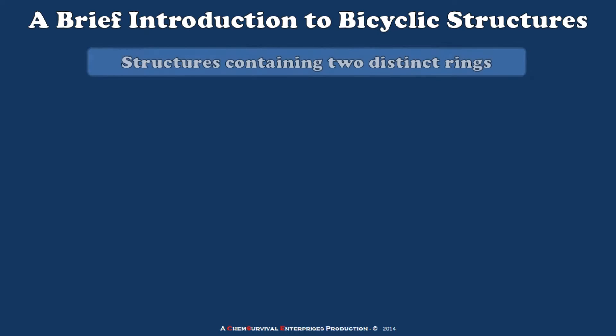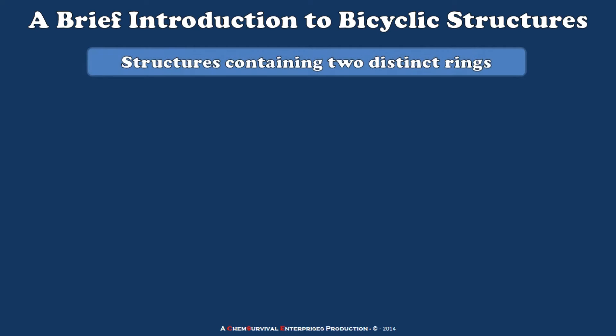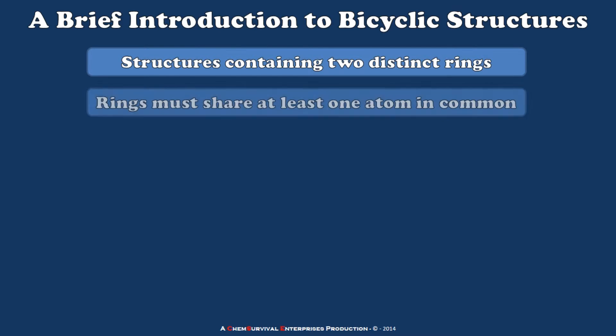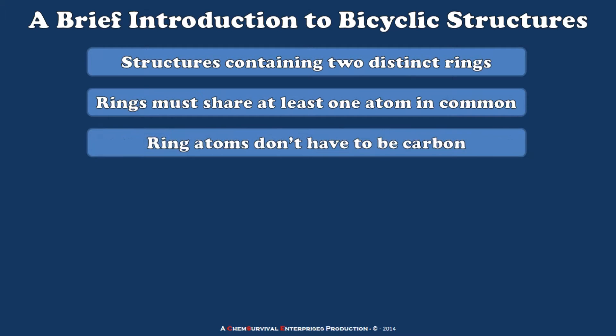So let's start by defining that. Bicyclic structures will always contain two distinct rings of atoms, and in order to fall into this class, those rings must share at least one atom in common with one another. Those atoms don't all have to be carbon, although I'm going to show you most of the examples today that have carbon only in that scaffold.